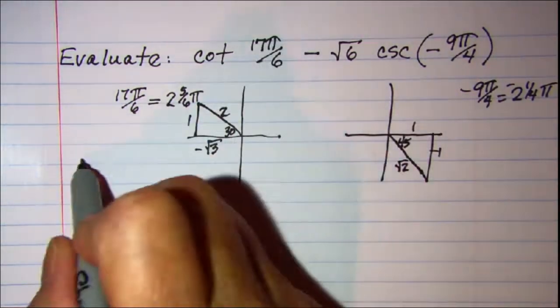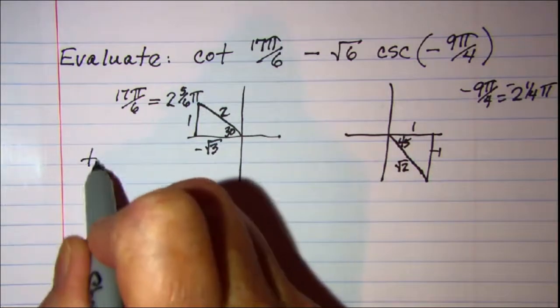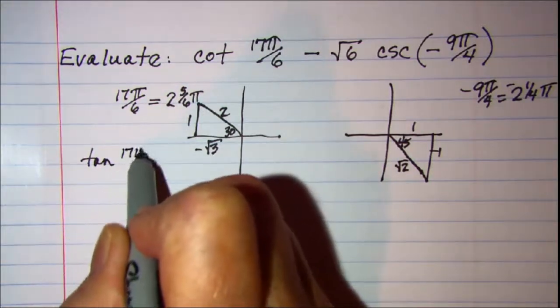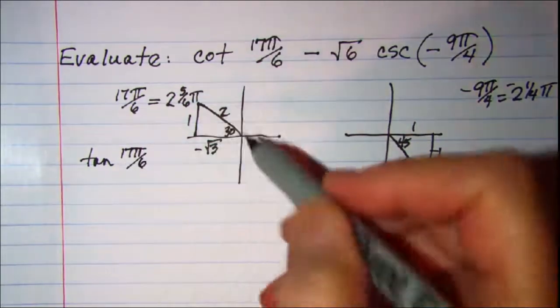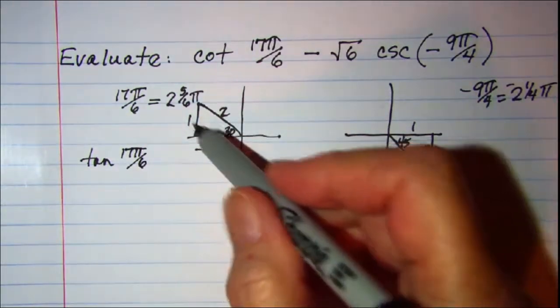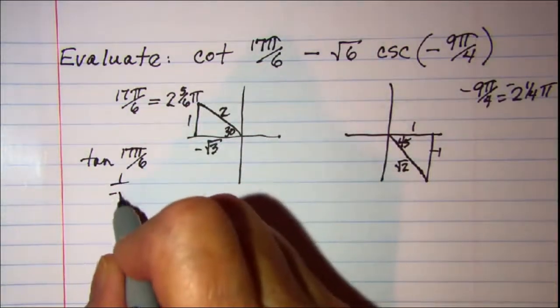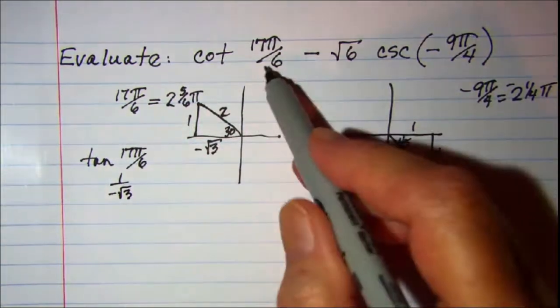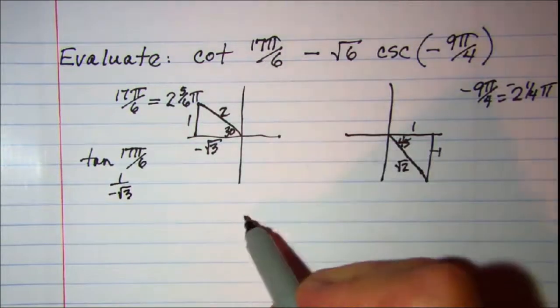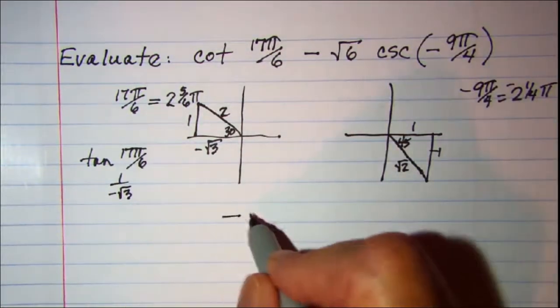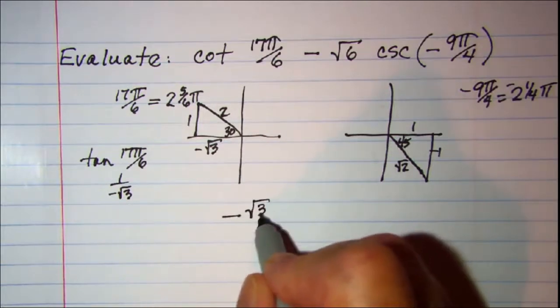Alright, cotangent is the reciprocal of tangent. So my tangent of 17π over 6 is going to be 1 over negative root 3. So my cotangent then will be the reciprocal of that which is just negative root 3 over 1.